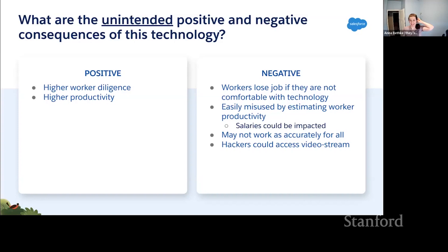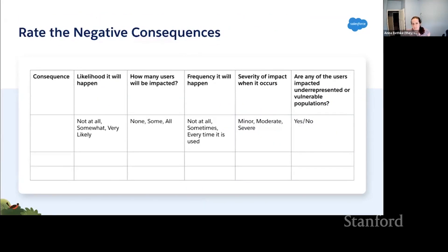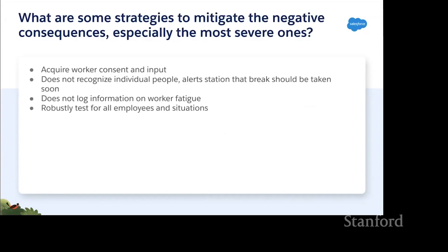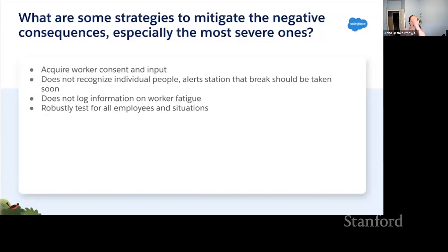Another concern is that hackers could access the video stream. So you start to think about how likely each risk is, how many users would be impacted, and how frequently it could happen — basically risk forecasting to decide which issues to prioritize. Then you look at mitigation strategies: acquire worker consent and input, make sure the system doesn't recognize individual people, blur faces, alert the station rather than tracking individuals, and don't log worker fatigue information.